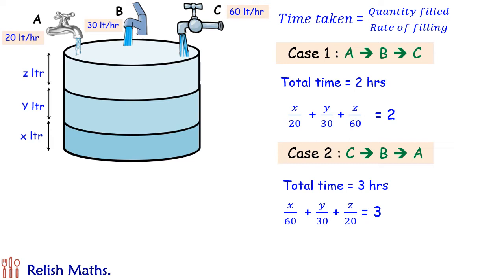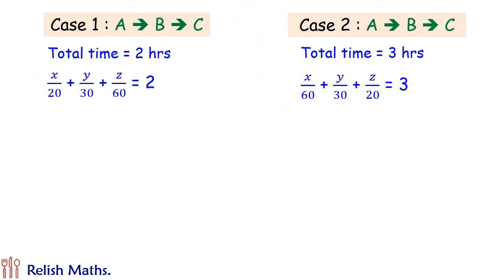Now using these two equations, we have to find X plus Y plus Z, which is same as capacity of tank. We have two linear equations in three variables. We cannot solve it to find individual values of X, Y, and Z, but we need to find only X plus Y plus Z, which may be possible in this case.